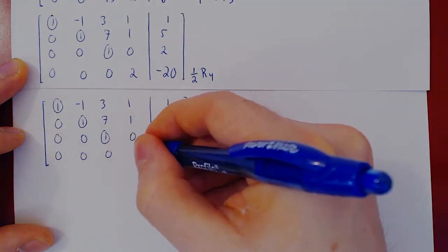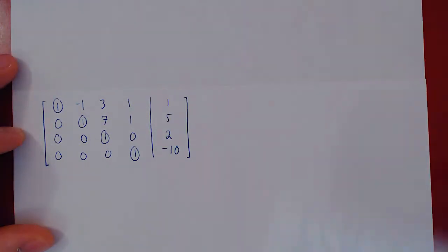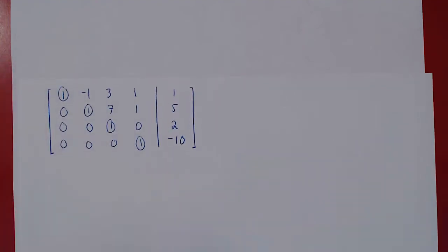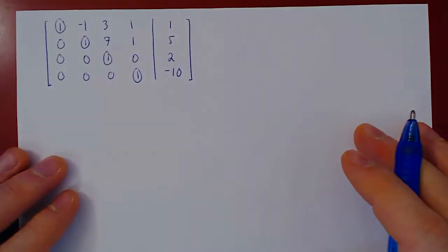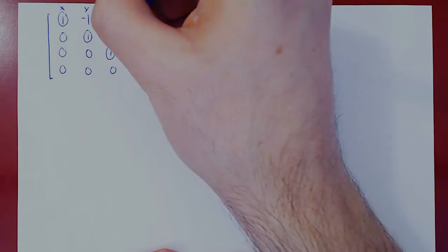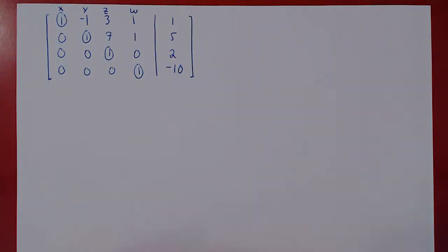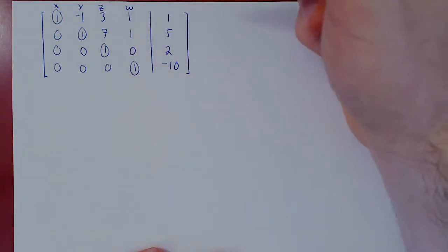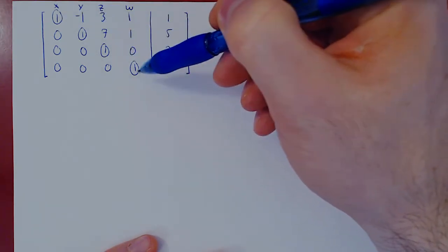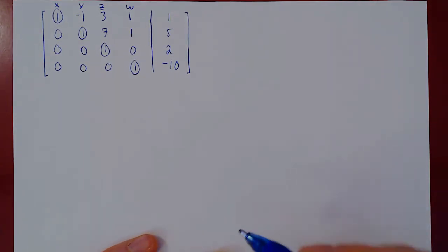We multiply by one half, so we get our fourth leading one and negative ten. Just to remind ourselves which columns correspond to which variable: x, y, z, and w. We have four variables — x, y, z, and w — each one possessing a leading one, therefore every variable is leading. Because of this, we have a unique solution.